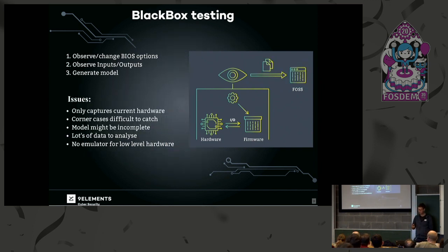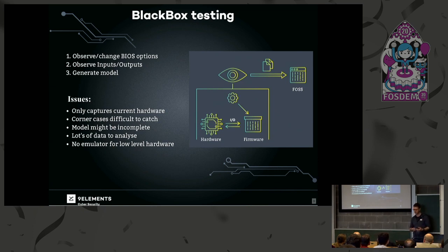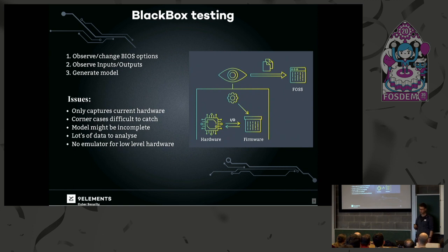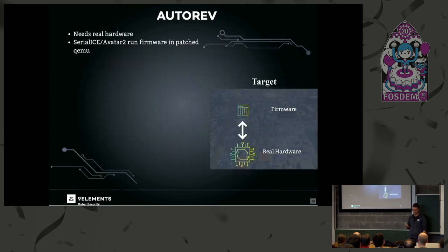But there are some issues with black-box testing. It only works on a single hardware. It's very difficult to see branches inside the firmware and to catch corner cases. There might be some fix-up for specific devices, and if we don't have that device, we simply won't see that fix-up when we observe the IO. Our model is likely incomplete, and there's lots of data to analyze. We cannot put the firmware in an emulator like QEMU because it doesn't emulate the hardware.